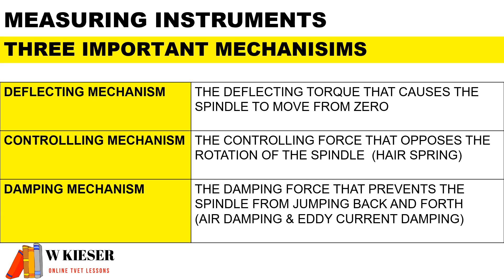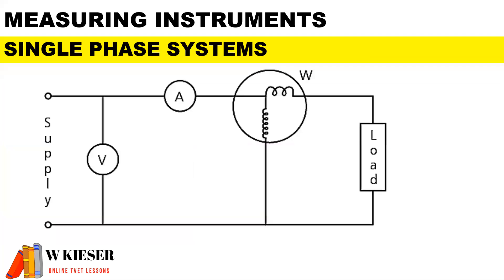For a single phase circuit, you'll find that the ammeter, which measures current, is in series with the load, and the voltmeter, which measures voltage, is in parallel with the load. For the wattmeter, we have a current coil in series with the load and a voltage coil in parallel with the load.